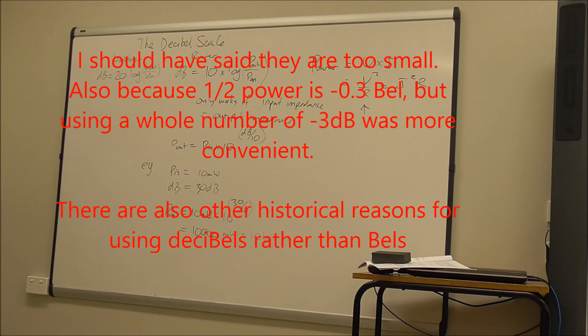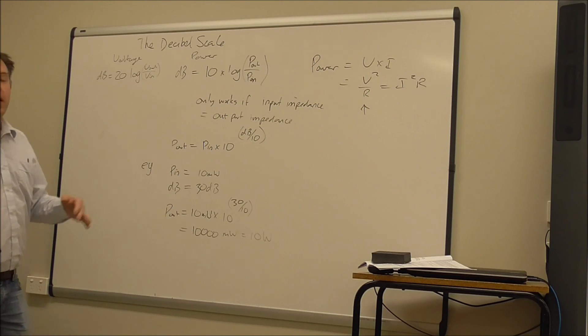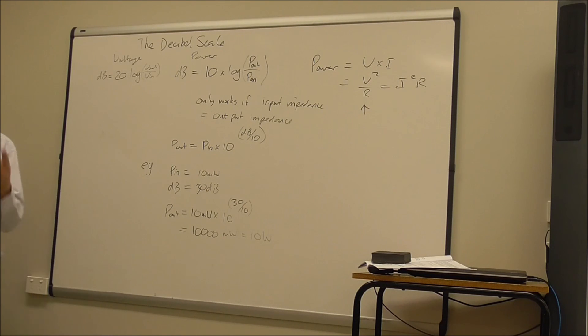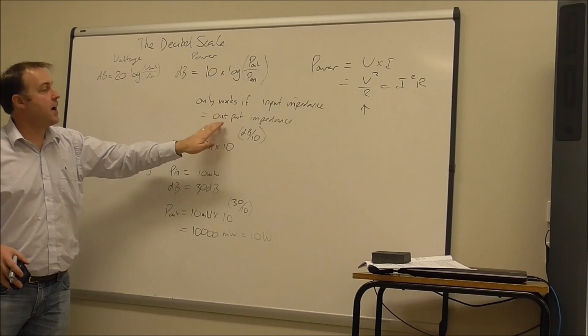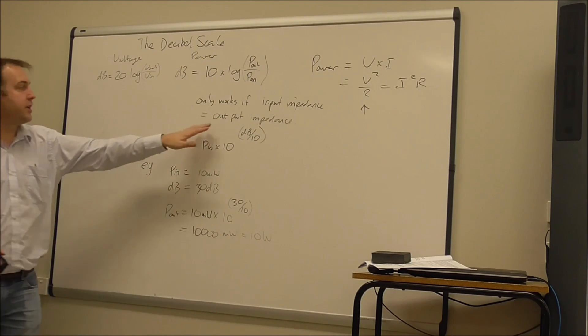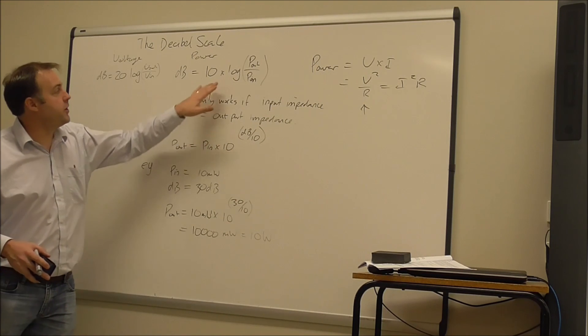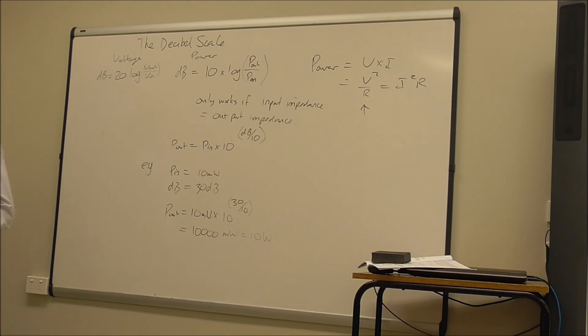So decibel scale, it's a logarithmic scale. Depending on whether we have the voltages or the power given to us, depends on which formula we need to use. If you see the power being used, you will probably also see a statement basically saying the input impedance is equal to the output impedance. So that should be a clue there for you to use this formula here.